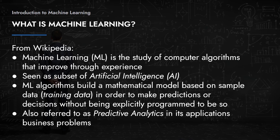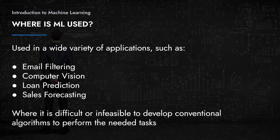Machine learning — I'll use 'ML' for short — has a very wide variety of applications: email filtering, computer vision, loan prediction, sales forecasting. These seem like very different domains, but what they all have in common is they use machine learning principles — developing algorithms to perform needed tasks in a way where you don't explicitly program every step, but the system is able to learn from data.